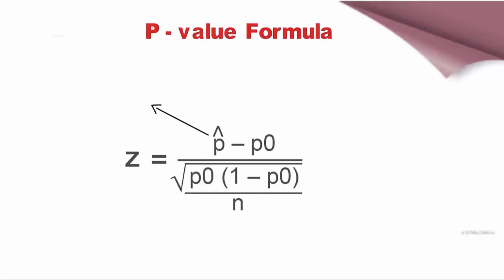Where p-hat equals sample proportion, P0 equals assumed population proportion in the null hypothesis, N equals sample size.